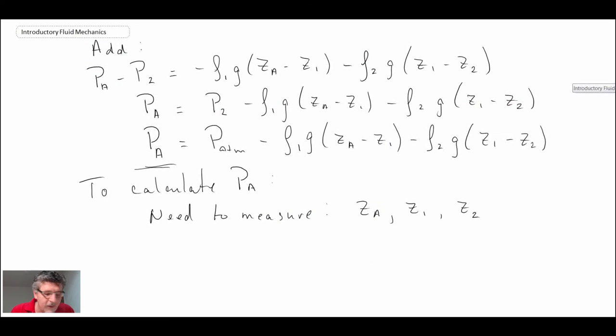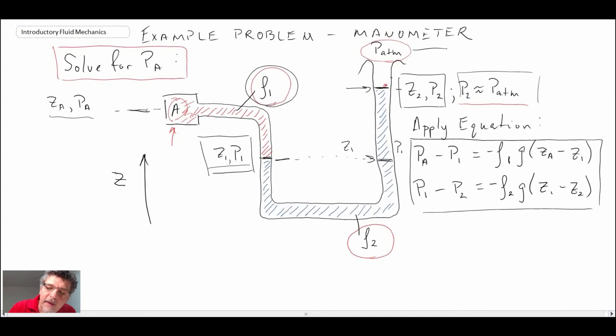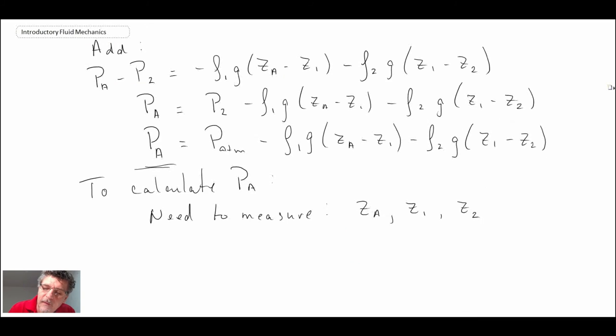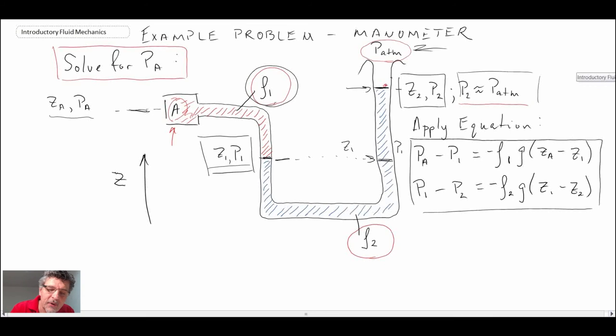The last thing we need to know is the atmospheric pressure. So with that, in order to get P_A we need to measure the geometry, interface, interface, and pressure atmospheric. And so what this example demonstrates is the ability to measure pressure at a location that is not necessarily exposed directly to the fluid within A.